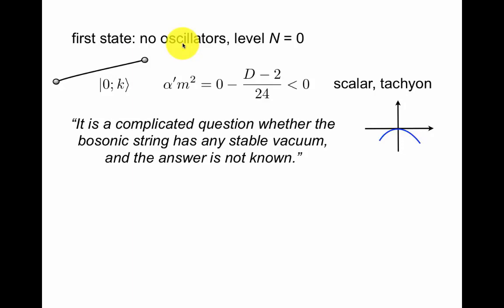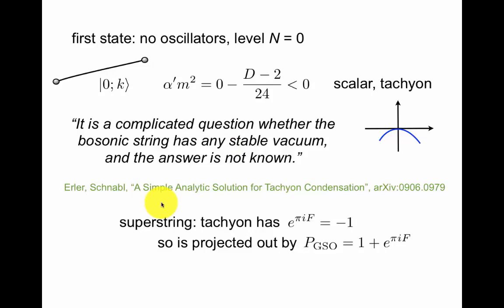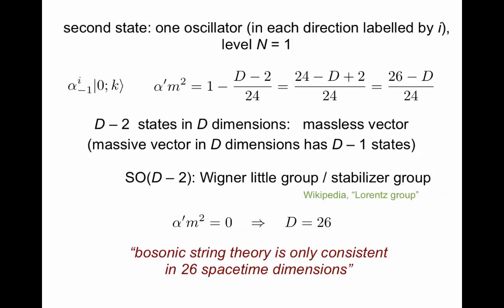So let's start with the first state where we haven't cancelled it, we have no oscillators, that means you have a negative energy. This state is a scalar, it has no space-time index i, so it's called a tachyon. A tachyon is something that travels faster than the speed of light, or more physically, it has a negative potential. The mass is of course the second derivative of the scalar potential, so having a negative mass means being unstable like this. This is a quote from Polchinski, it's a complicated question whether the bosonic string has any stable vacuum, and the answer is not no. I think it's fair to say that this is a difficult question, but there's certainly a lot of progress since Polchinski's book. For example, this paper discusses simple solutions for this. In the superstring, however, the tachyon has eigenvalue minus one of this operator, and it turns out to be natural in superstring theory, also for other reasons, to impose this GSO projection. Things that have eigenvalue minus one of this operator are simply projected out. So the tachyon will not be part of the spectrum of superstring theory.